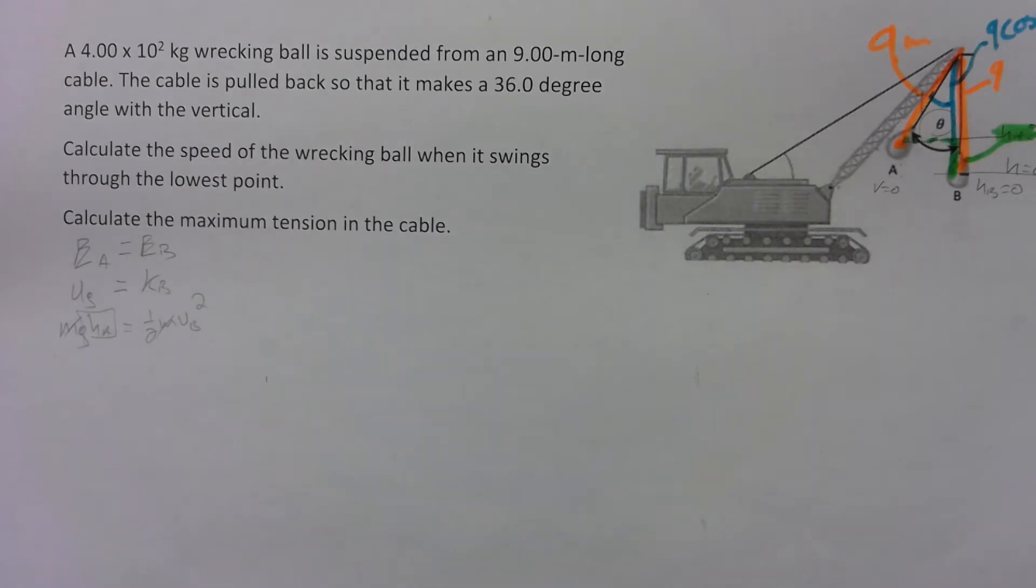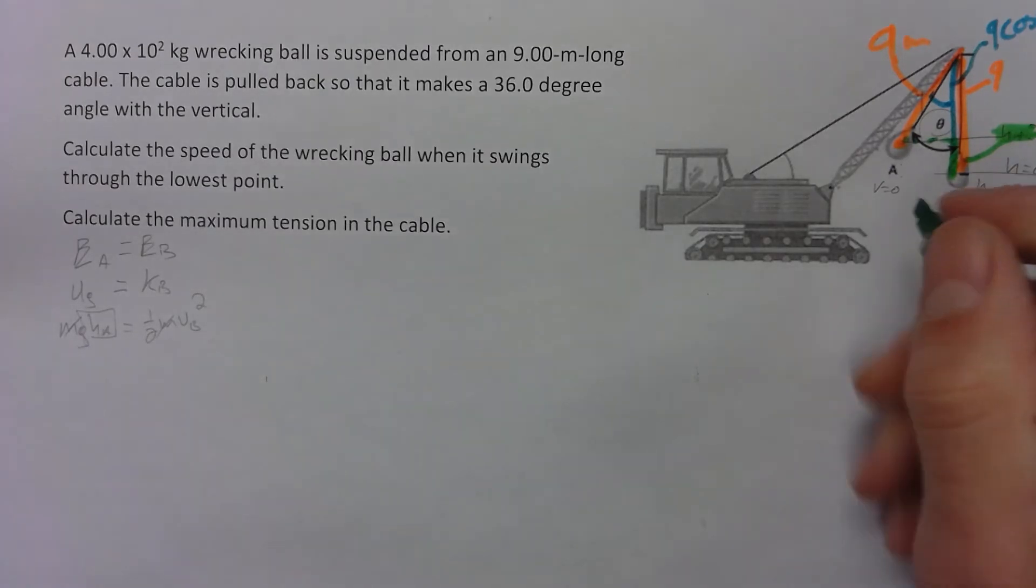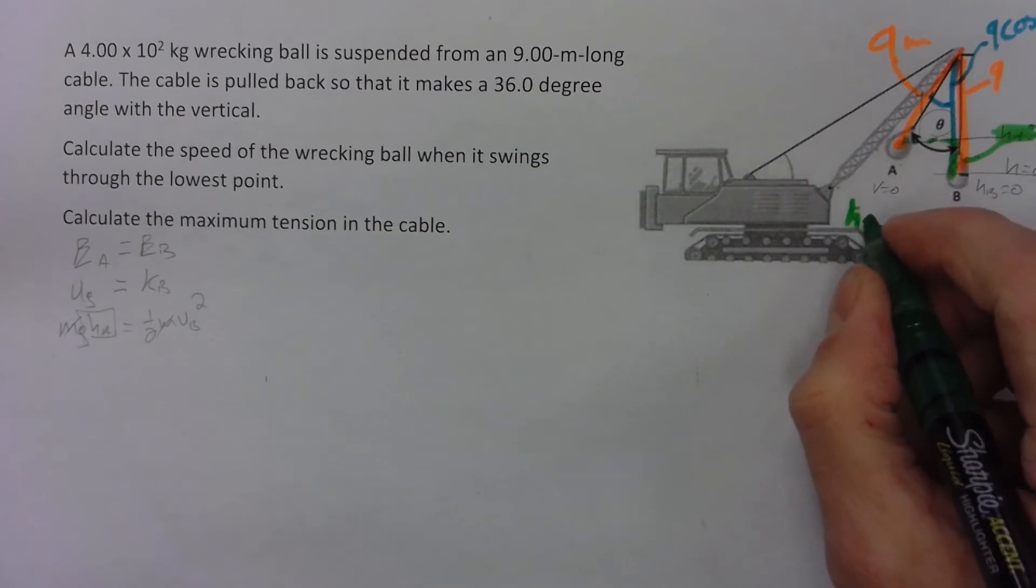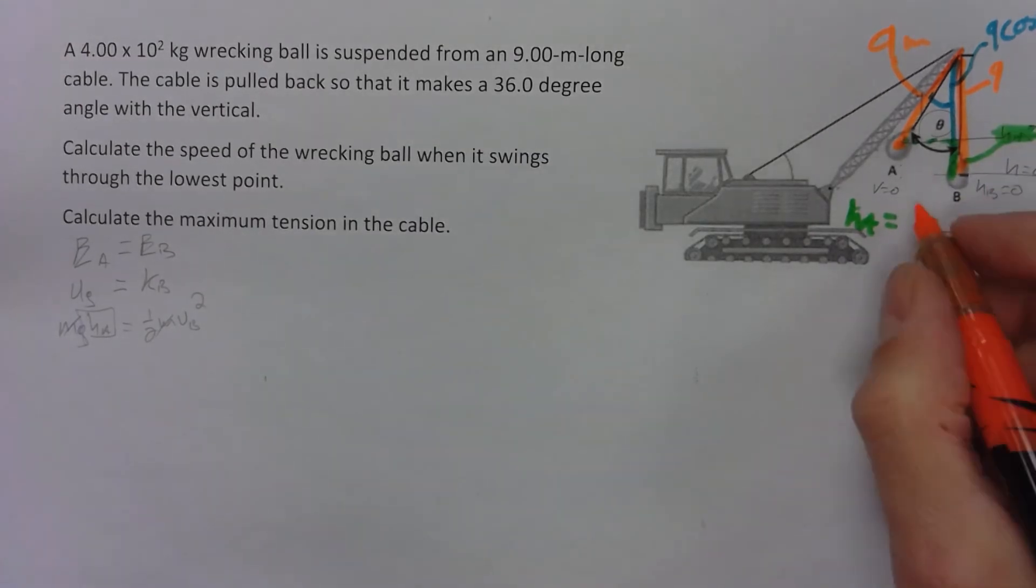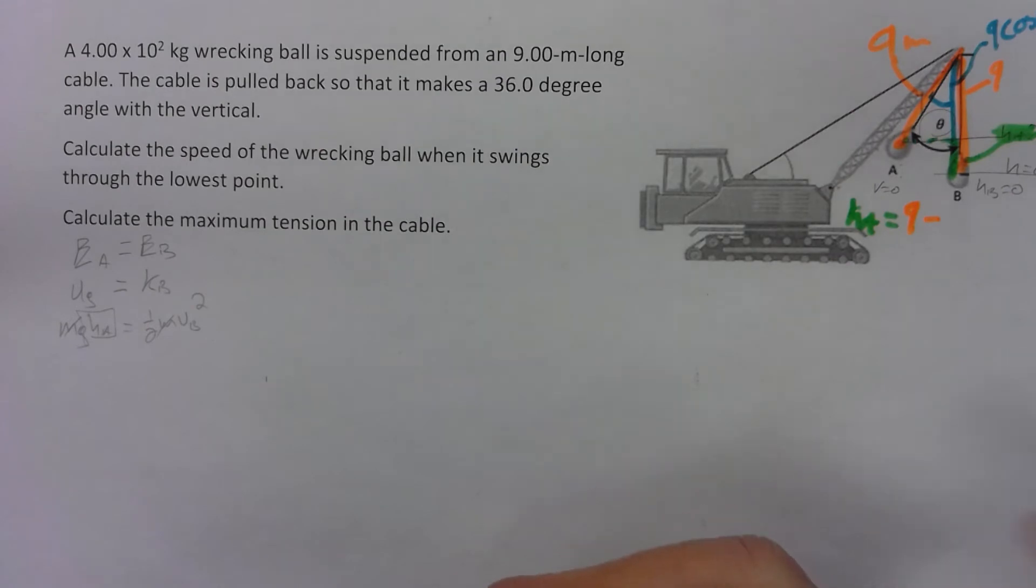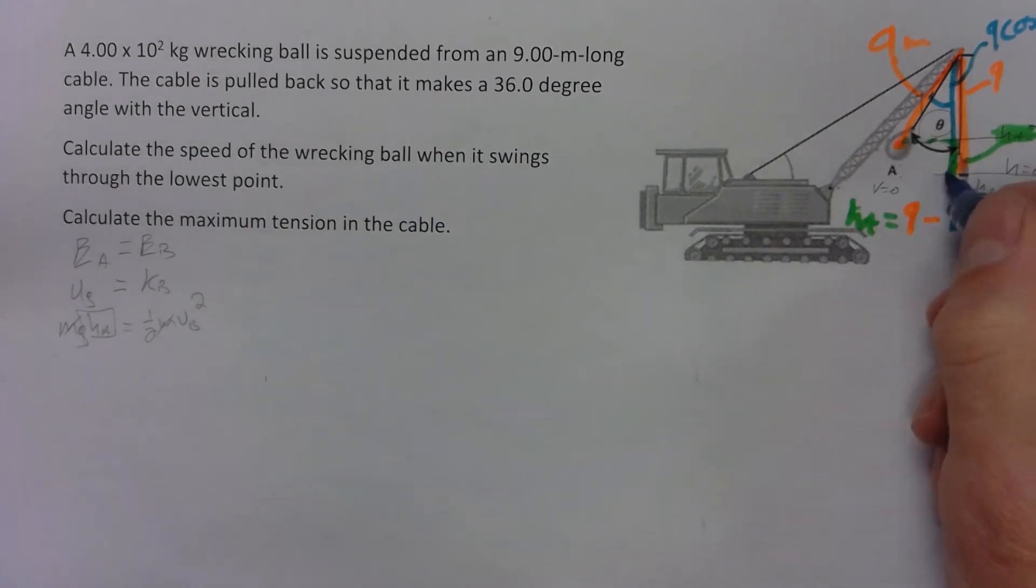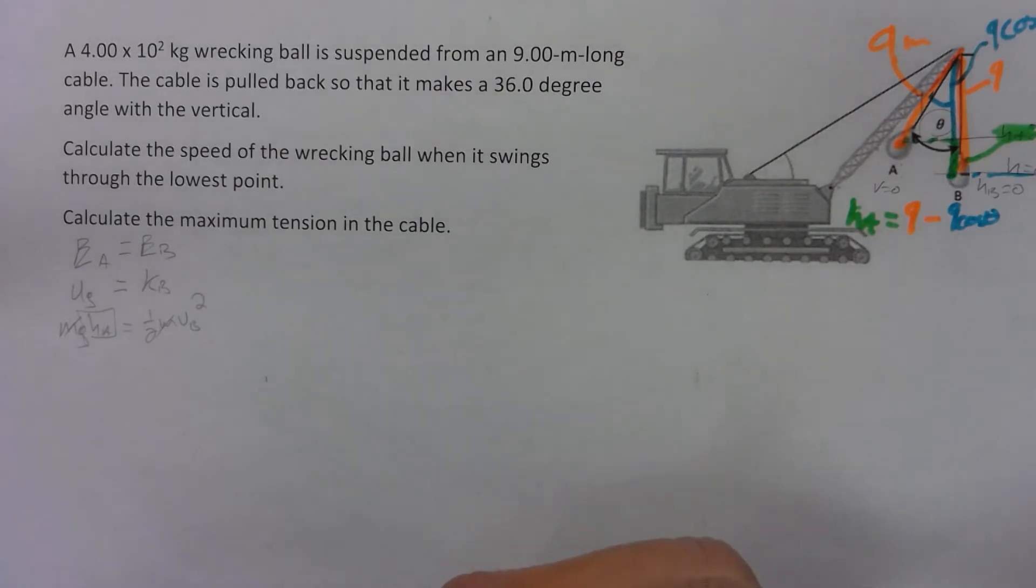So that green part is going to be, is going to be that h of A, is going to equal the nine, the L, the nine minus the blue part, which is nine cosine theta. And that's taking zero to be the bottom, right.